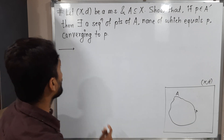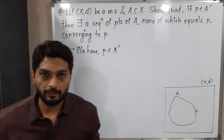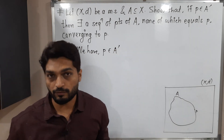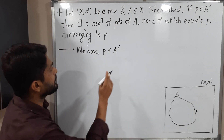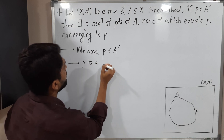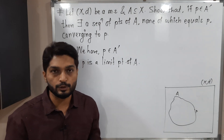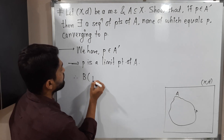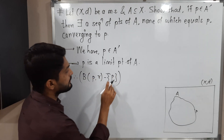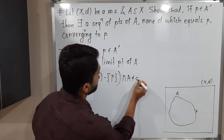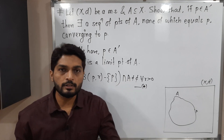Let us start with the given information. We have P belongs to A dash, that means P is a limit point of A. And we have to find a sequence of points of A, none of them equal to P, and that sequence is converging to P. So since P is a limit point of A, by definition: B(P, R) minus singleton {P}, intersection A is not equal to empty set, and it is true for every R greater than 0. This is the most important thing — that set is non-empty for every R.